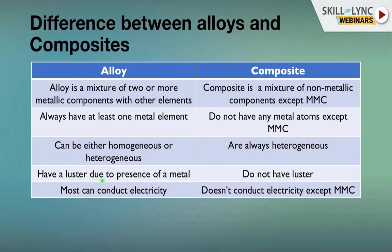Alloys and metals have a luster due to the presence of metal — that shiny finish is always there. Gold has the highest luster, while carbon or cast iron has very little, but still has some. Composite materials, however, do not have luster.